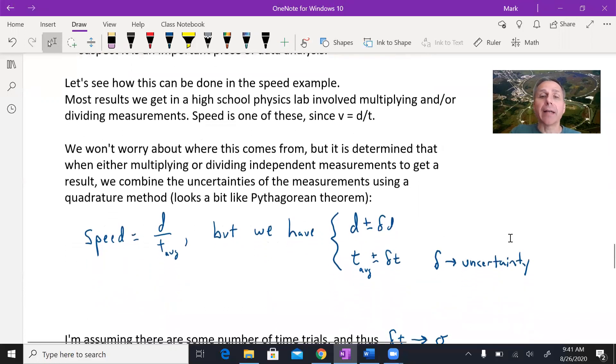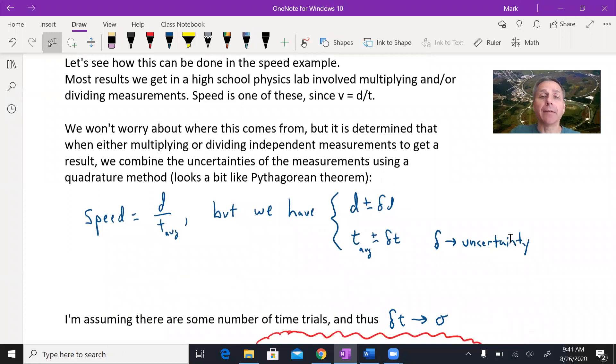So here we're dividing, and we can assume that we made the measurements. We measured off some distance. We're going to measure the time. And usually, for something like time, if you're using a stopwatch, you're going to do multiple trials. You want to always do trials if you can for different measurements.